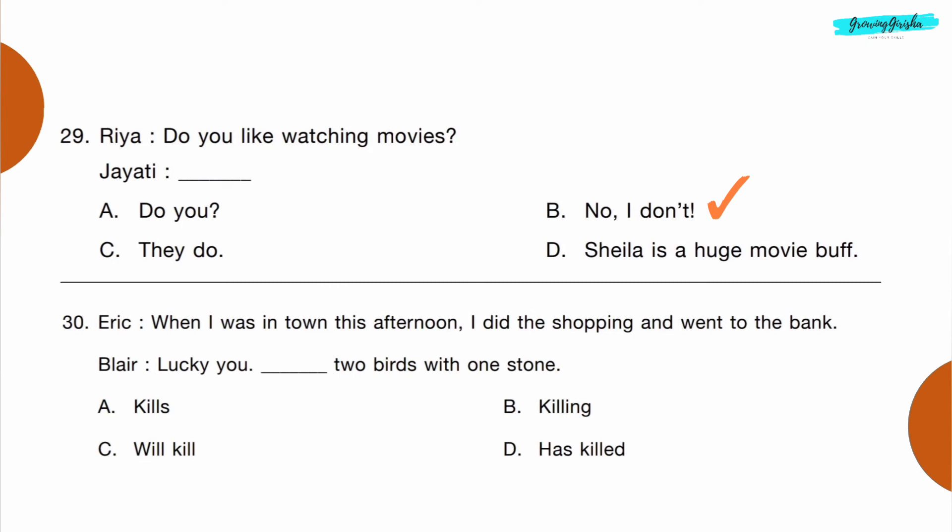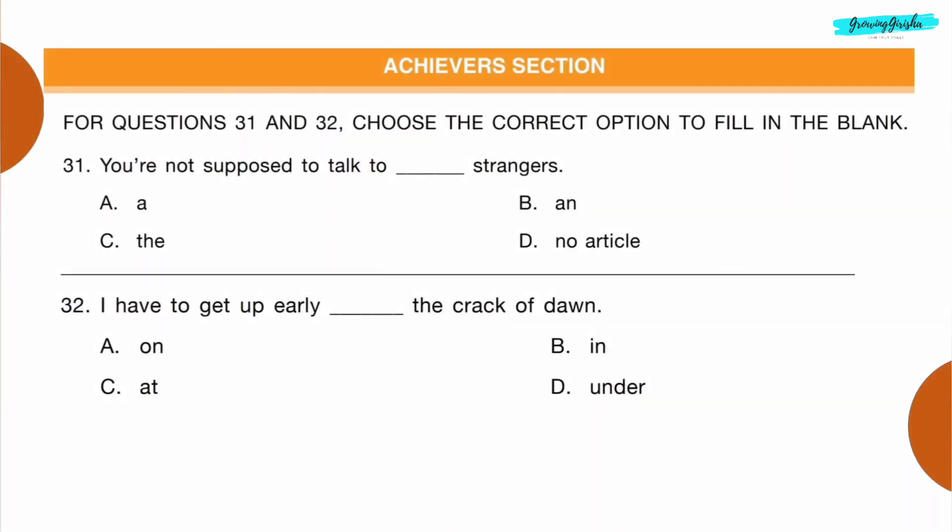Question 30 — Eric: When I was in town this afternoon I did the shopping and went to the bank. Blair: Lucky you — dash two birds with one stone. Option B: killing.